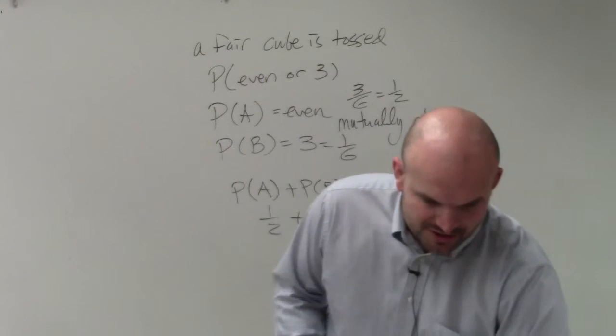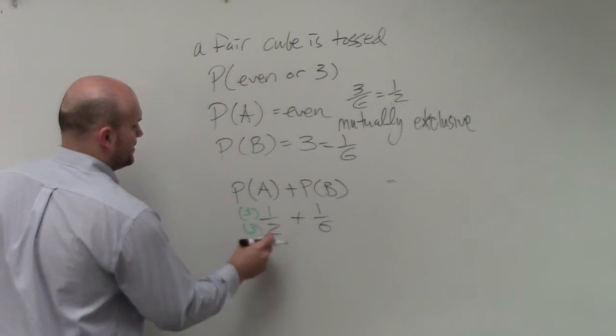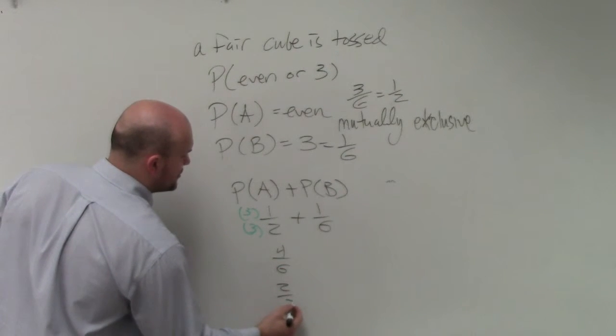Therefore, when adding fractions, remember, you have to get common denominators. So you'd multiply by 3 over 3. And therefore, you get 4 over 6, which reduces to 2 thirds.